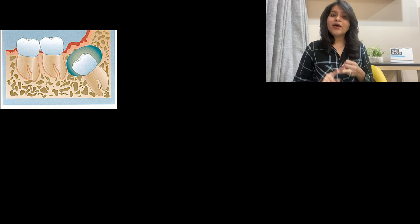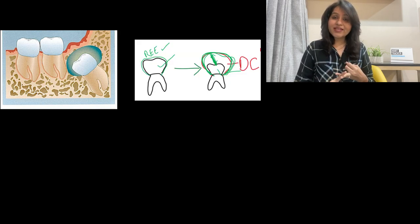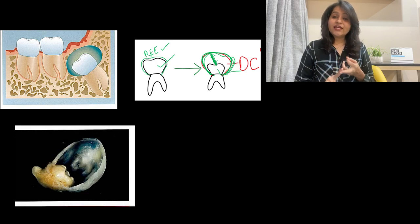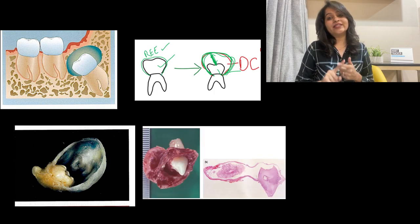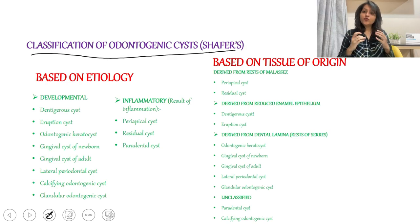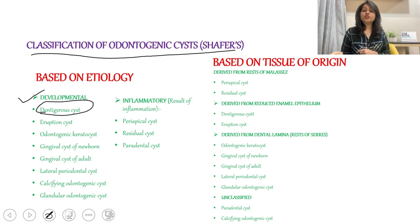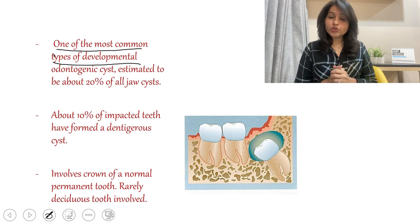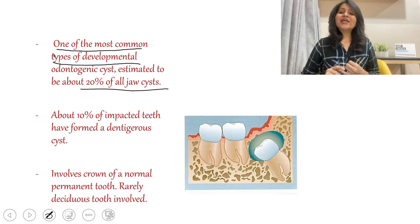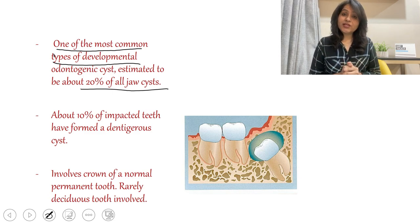Key important points: a cyst that surrounds the crown of an impacted tooth, formed by fluid accumulation between the reduced enamel epithelium and the enamel surface. The cystic cavity contains the crown of the tooth, and the cyst is always attached at the neck of the tooth or at the CEJ. It falls in the category of developmental odontogenic cysts, with the tissue of origin being reduced enamel epithelium. This is one of the most common developmental odontogenic cysts, accounting for 20% of all jaw cysts, and it is always associated with an impacted tooth — 10% of impacted teeth may show a dentigerous cyst.